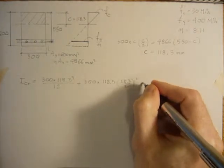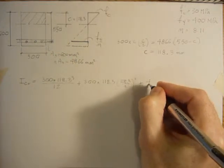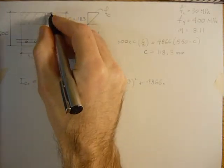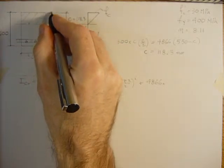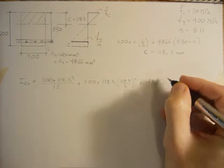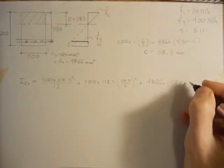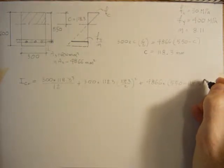And then what's below the neutral axis, we've got the transformed area: 4866 times 550 minus 118.3, which gives us this distance, 550 minus 118.3, and that's squared.